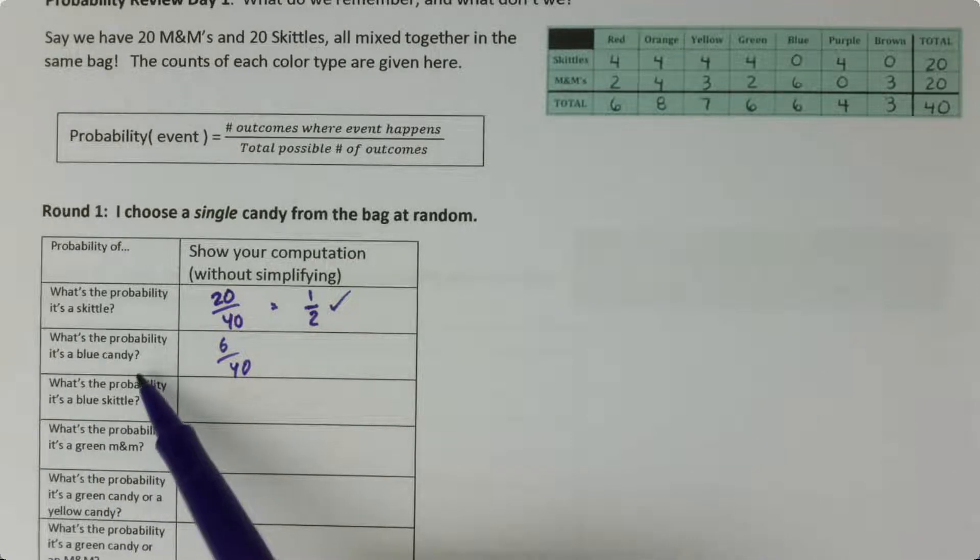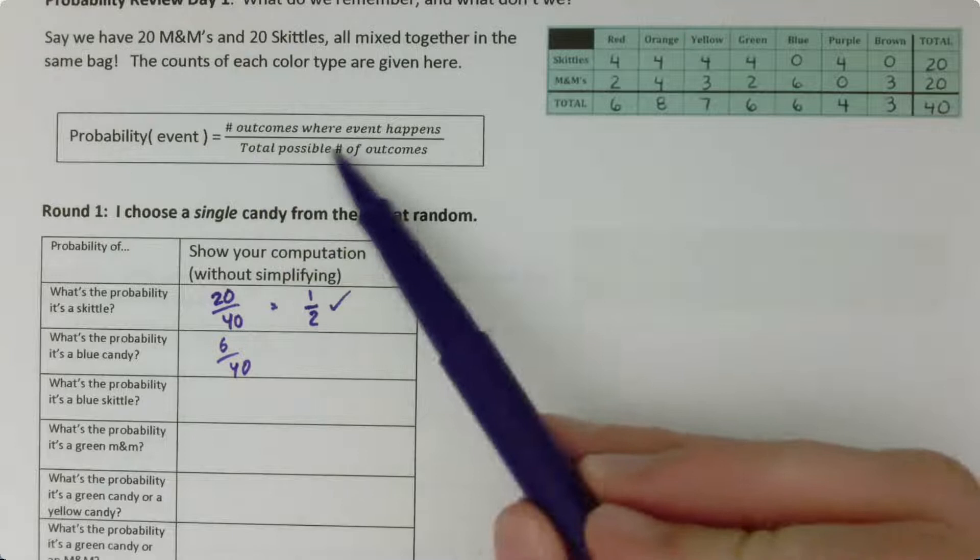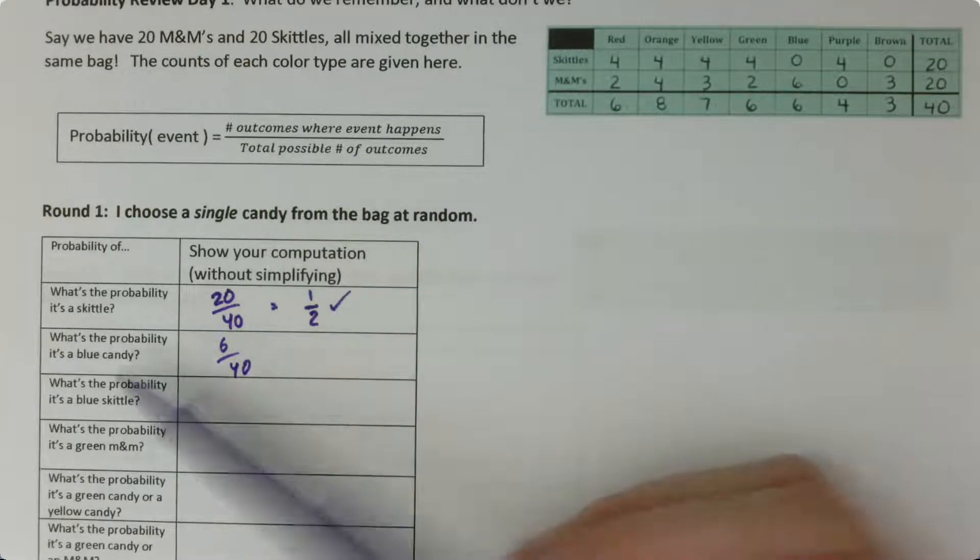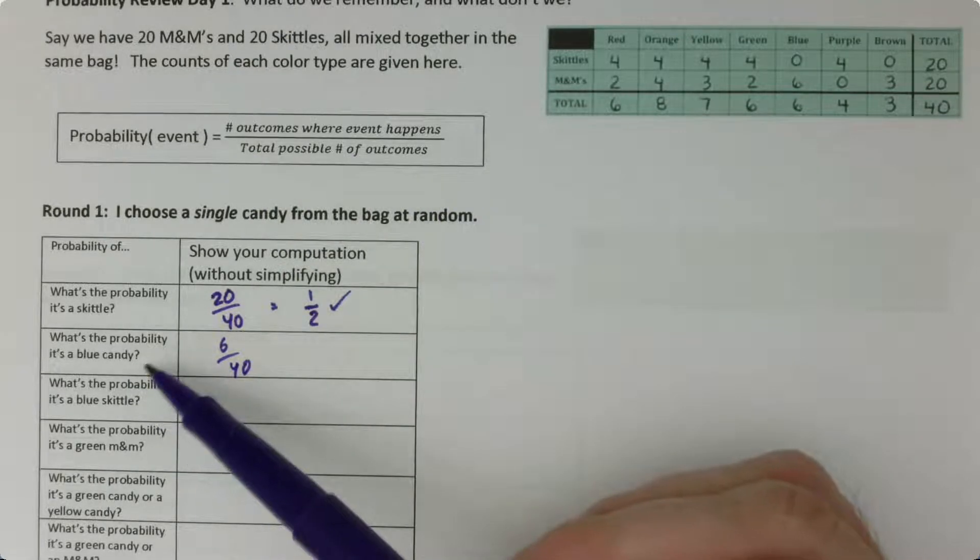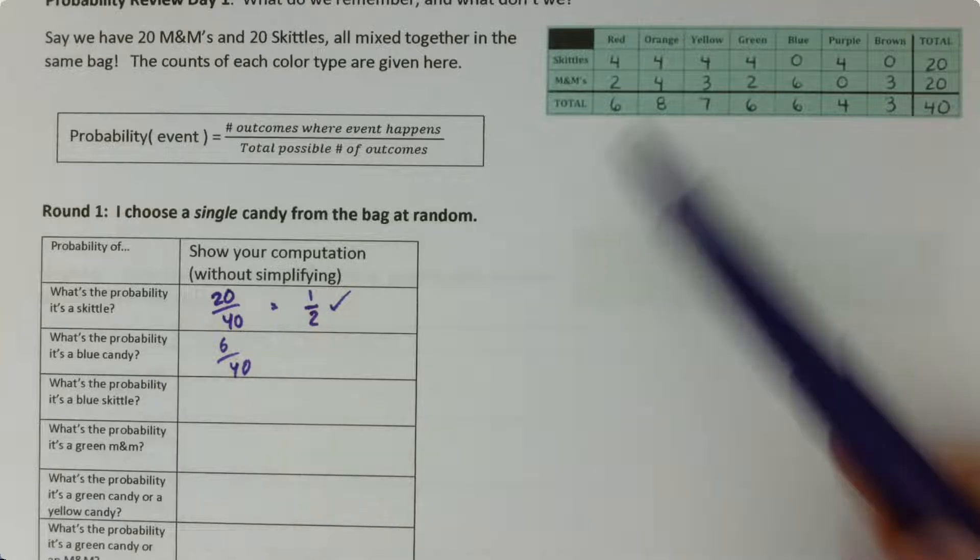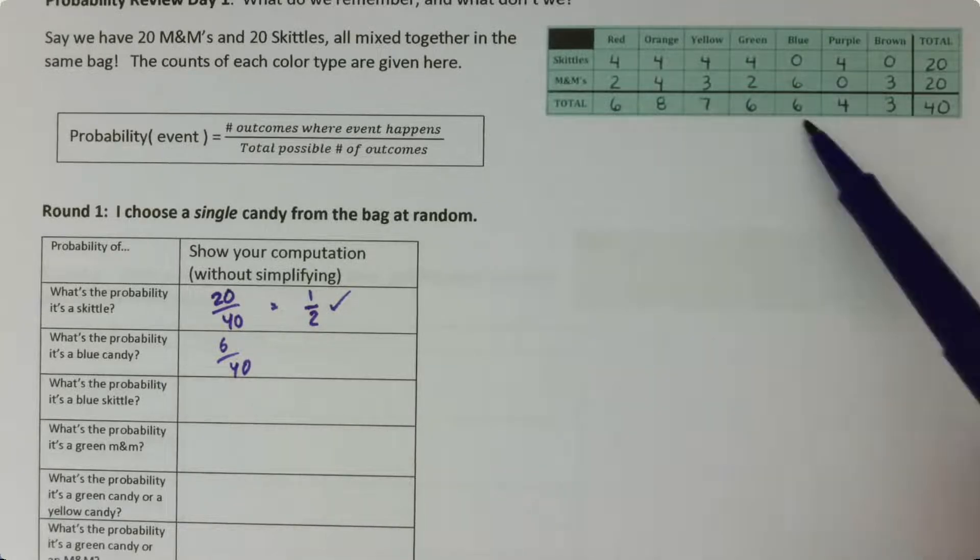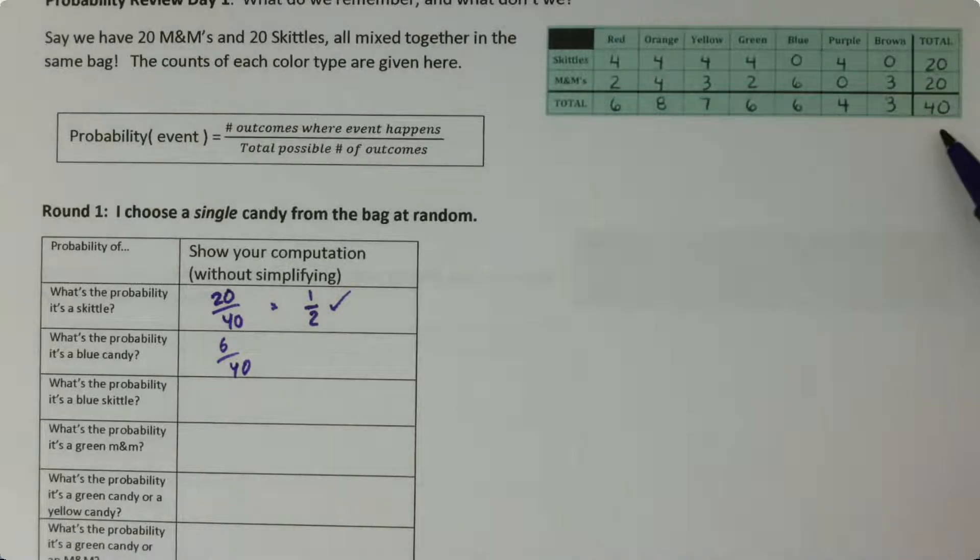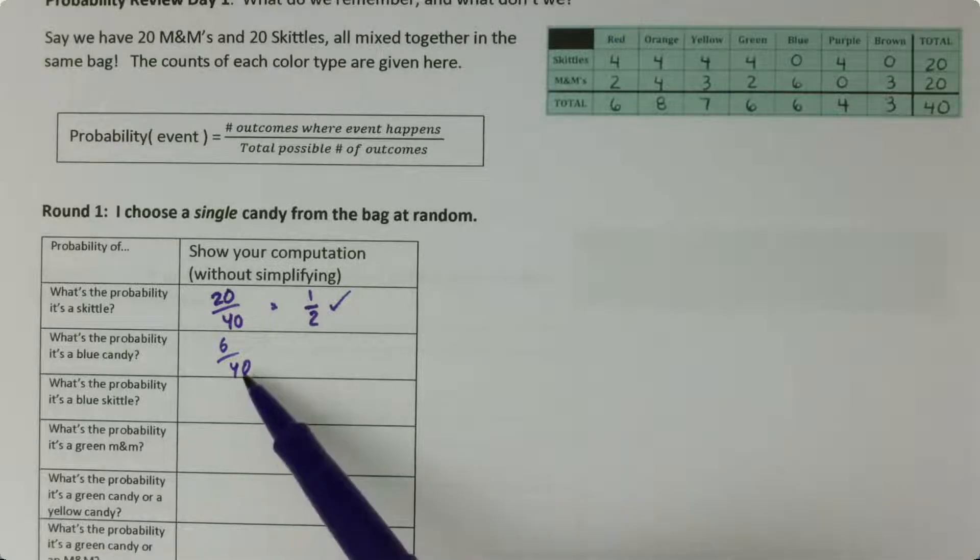Probability of drawing a blue candy. So again, we look at total number of candies that we could have drawn which satisfy this description of an event. So how many candies are blue? So here's blue, there's six blue candies. And again, out of 40 total candies we could have drawn, so six out of 40.